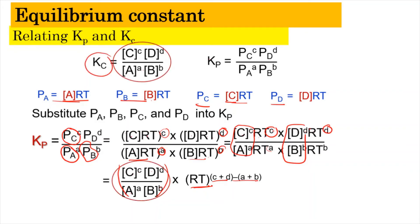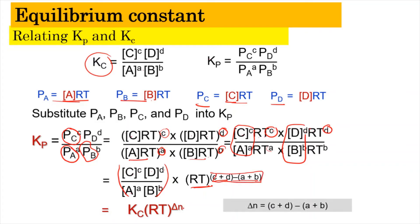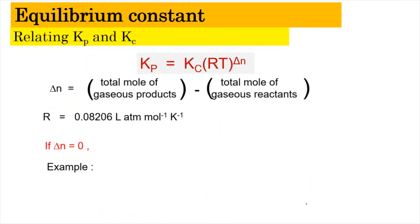So we can rewrite the expression as Kp = Kc × (RT)^ΔN, where ΔN equals c + d − a − b. ΔN is the total number of moles of gaseous products minus the total number of moles of gaseous reactants. R is the gas constant, 0.08206 L·atm·mol⁻¹·K⁻¹, and T is temperature in Kelvin.